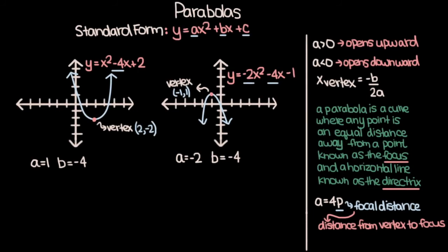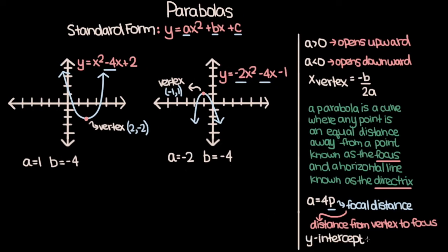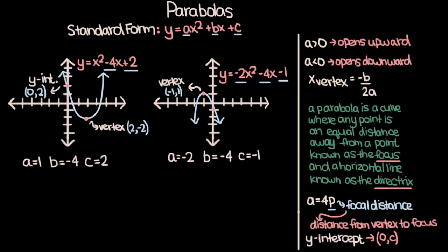Now let's talk about the y-intercept and the axis of symmetry. The y-intercept for a parabola given in standard form is the point (0, c). The y-intercept is where the curve intersects the y-axis, which is always where x equals 0. If we plug in 0 for x, we get y equals c. For the parabola on the left, c equals 2, so the y-intercept is (0, 2). For the parabola on the right, c equals negative 1, so the y-intercept is (0, negative 1).